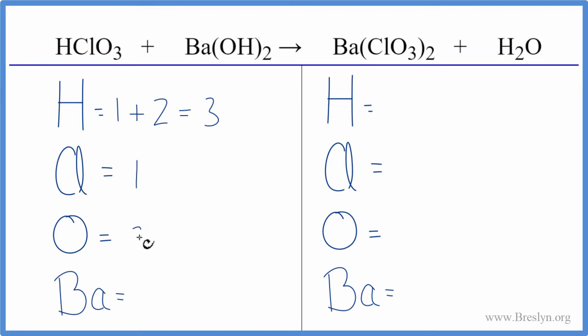Oxygens, we have the three. And this two applies to everything in parentheses. So two times the one gives us two more. So we have five oxygens and then one barium.